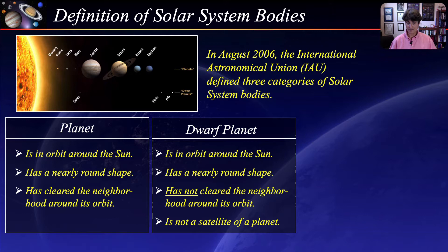A dwarf planet is a celestial body that, just like a planet, is in orbit around the sun. It too has sufficient mass for its self-gravity to overcome rigid body forces so that it assumes a nearly round shape. However, it has not cleared the neighborhood around its orbit — in other words, it is not the gravitationally dominant body in its orbit. By definition, this is really the difference between a planet and a dwarf planet, and a dwarf planet is not a satellite of any of the other planets.